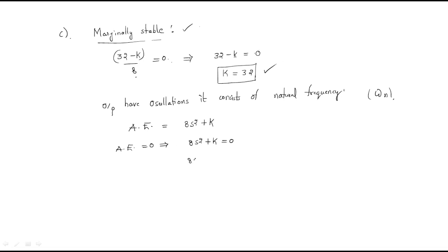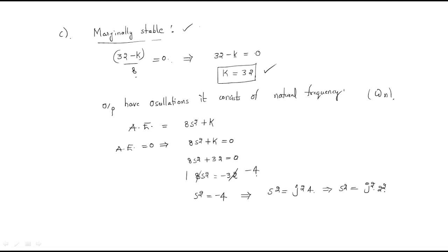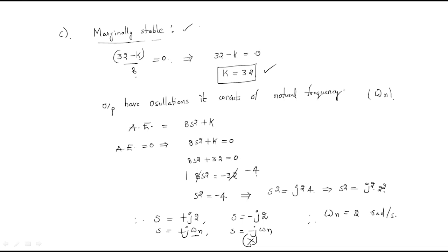Solving: 8s² = −32, so s² = −4. This means s² = j²·2², giving s = ±j2. Since the standard form is s = ±jωn, the natural frequency is ωn = 2 radians per second.